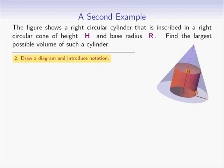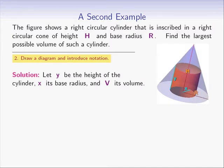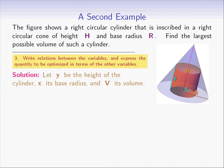The next step is to draw a diagram and introduce notation. We already have a diagram, but we need notation for the dimensions of the cylinder and its volume. Let y be the height of the cylinder, x its base radius, and v its volume. The quantity to be optimized is v, and using the geometry formula, V equals pi x squared times y.